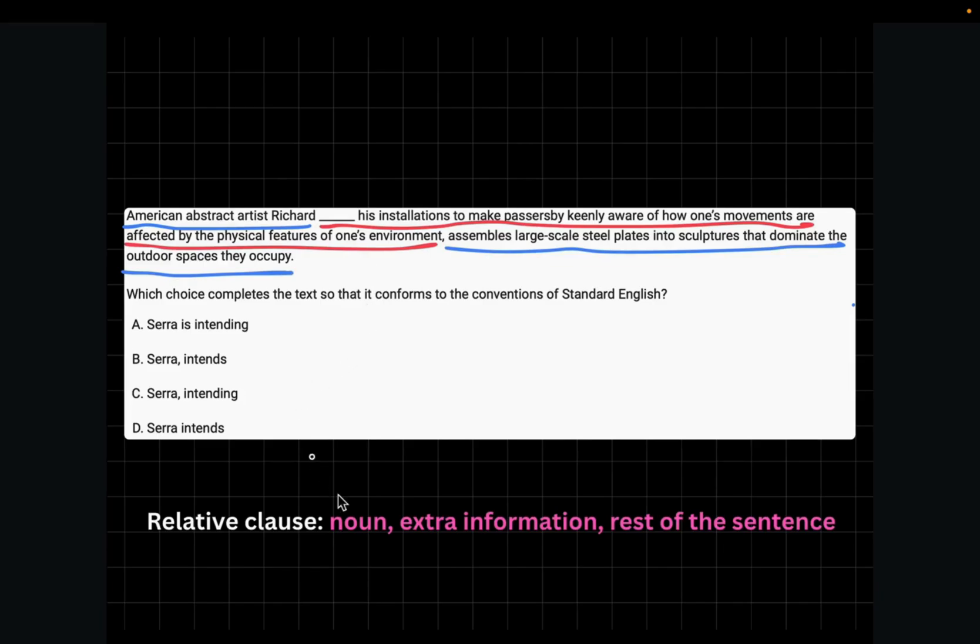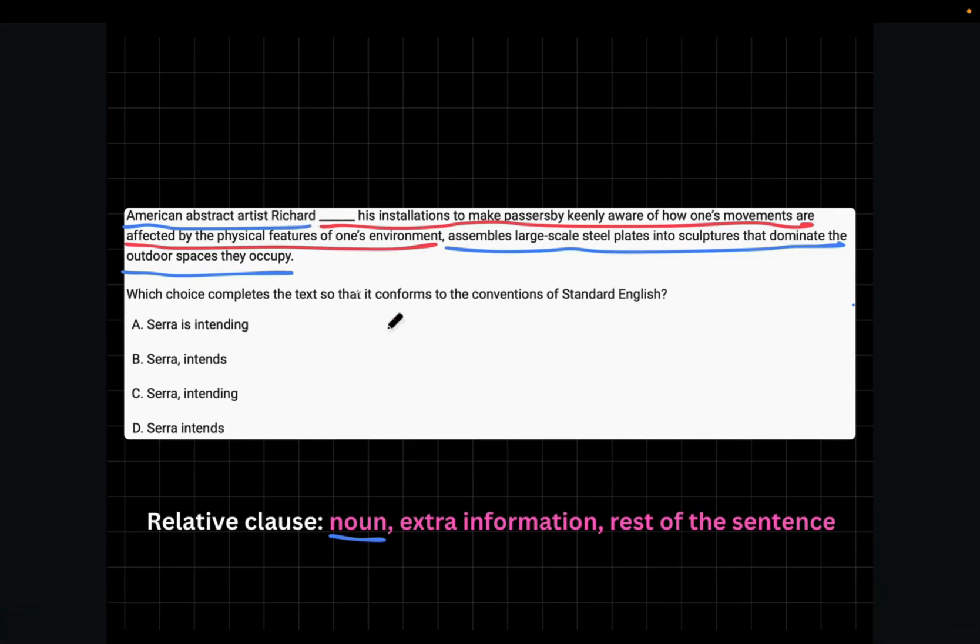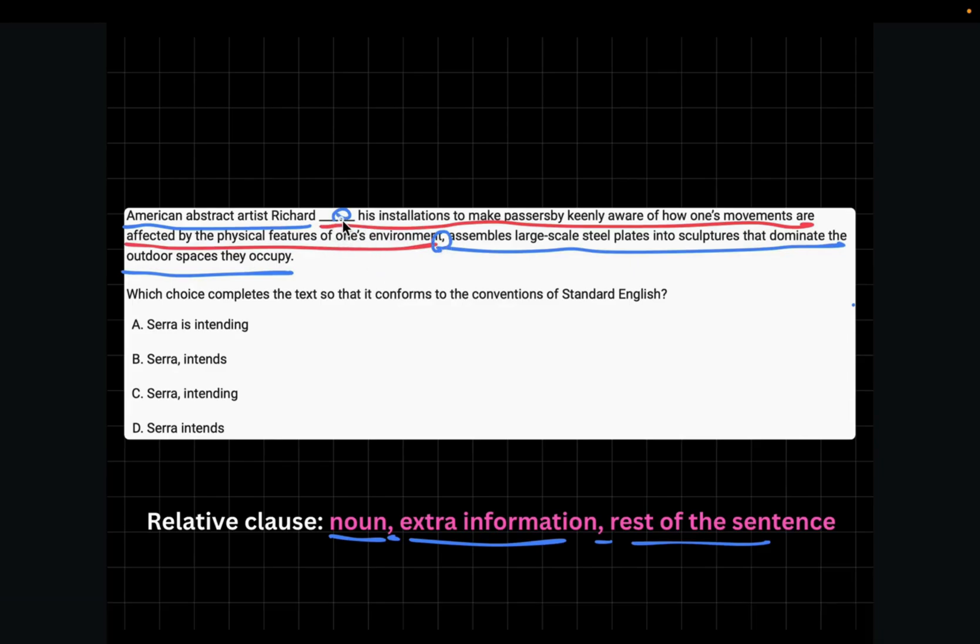It is a relative clause question. And in relative clause questions, there is going to be a noun or a noun phrase. In this case, American abstract artist Richard Serra. This is a noun phrase. Then there's going to be a comma. So there's supposed to be a comma here in the blank. And then there's the extra information, which is this red part over here. Then another comma. You can see a comma is here. And then the rest of the sentence. So you can see that there's supposed to be a comma in the blank. Choice A does not have a comma. Choice B and C both do. Choice D does not have a comma. So we can immediately cancel choice A and D out because there is no comma.